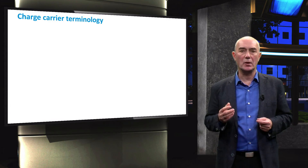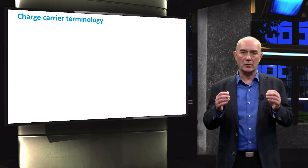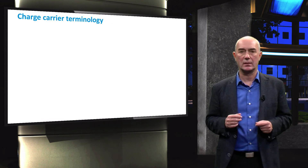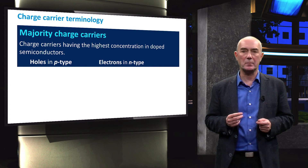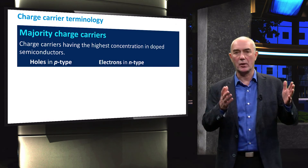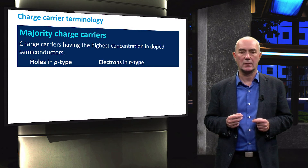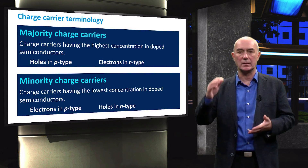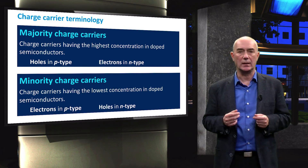We have seen how doping can manipulate the concentration of electrons and holes in semiconductors. Due to the mass action law, when one type of charge carrier is increased, the other type is decreased. We call the carriers whose concentration is much larger than the other type majority carriers — holes in P-type materials and electrons in N-type materials. Minority charge carriers are the carriers with much lower concentration — electrons in P-type materials and holes in N-type materials.